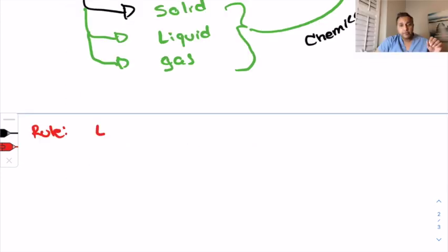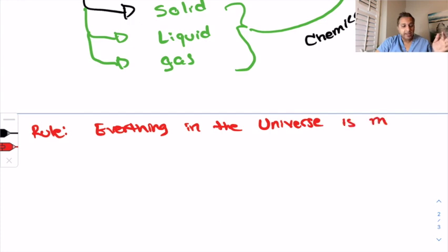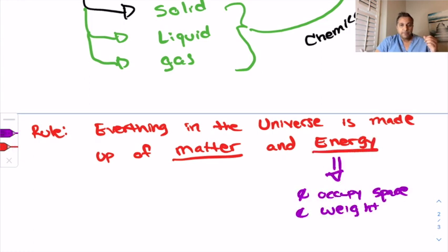Everything in the universe has a rule. The rule for matter is that everything that we know that exists in the universe is either made up of matter or energy, and there are no exceptions to this rule. Energy does not occupy space and it doesn't really have any major physical properties such as weight or mass. But in the universe, these two things are always there.